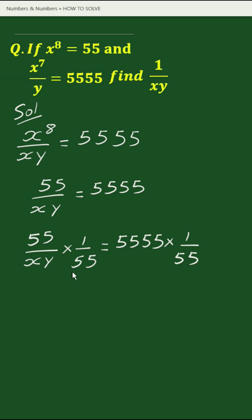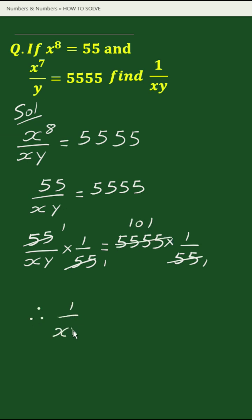Here, 55 will be reduced by 55, giving 1. And 5555 will be reduced by 55, giving 101. Therefore, 1 by xy equals 101.